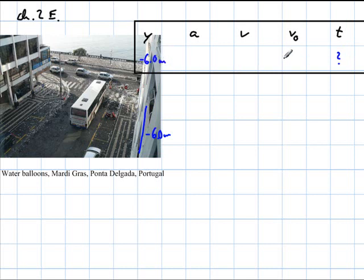There's information implied. The initial velocity starts from rest, so 0 meters per second. And the acceleration due to gravity, negative 9.8 meters per second squared.